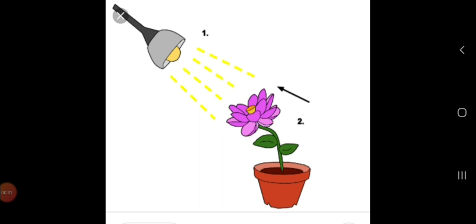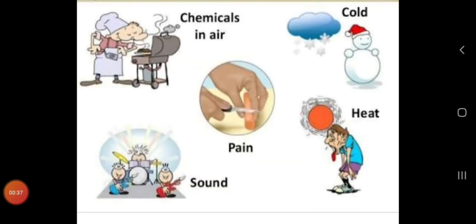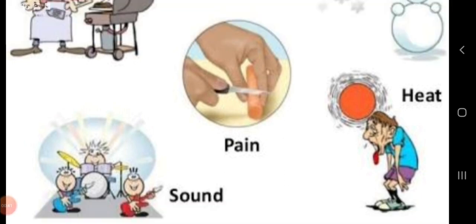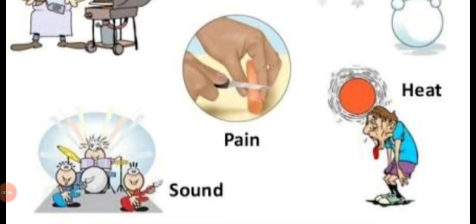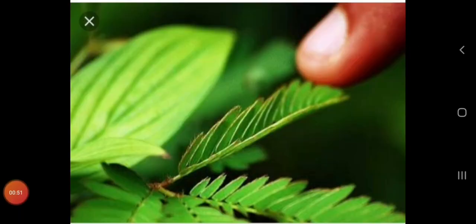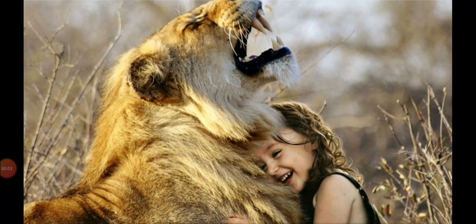Living organisms show their response to different kinds of stimuli like light, heat, cold, sound, pain and touch. Working together of various organs to produce a proper response to various stimuli is called coordination.